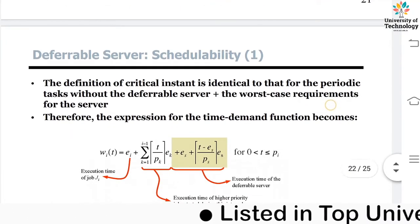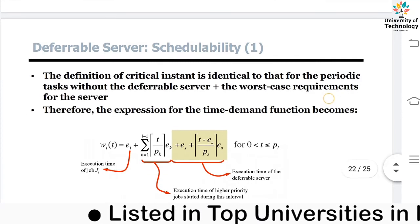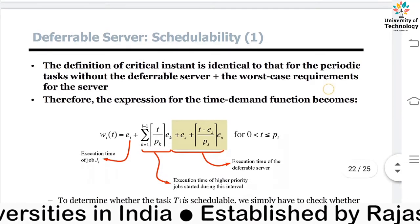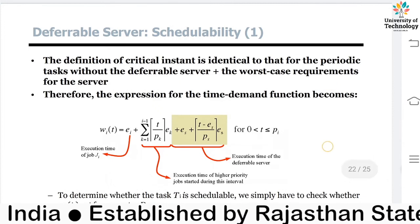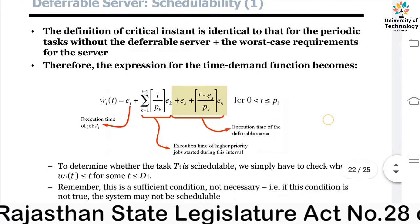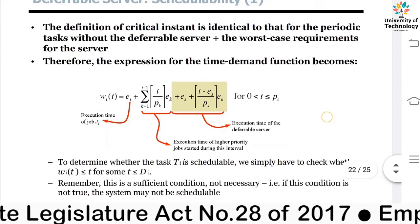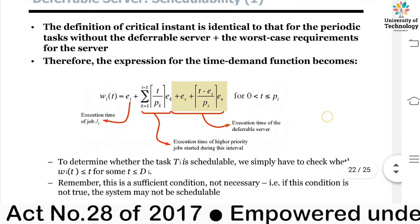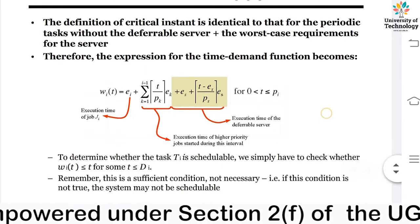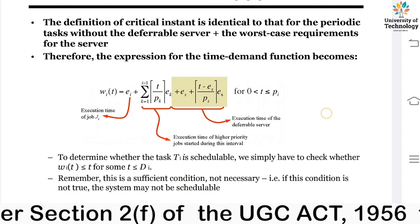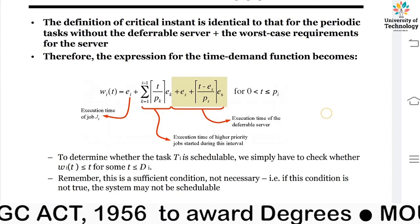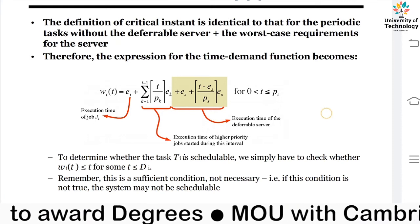Now, for deferrable server schedulability, the definition of critical instance is identical to that of a periodic task without a deferrable server, but with the addition of the worst-case requirement of the server. So it is the critical instance of periodic tasks without the deferrable server plus the worst case requirement of the server.